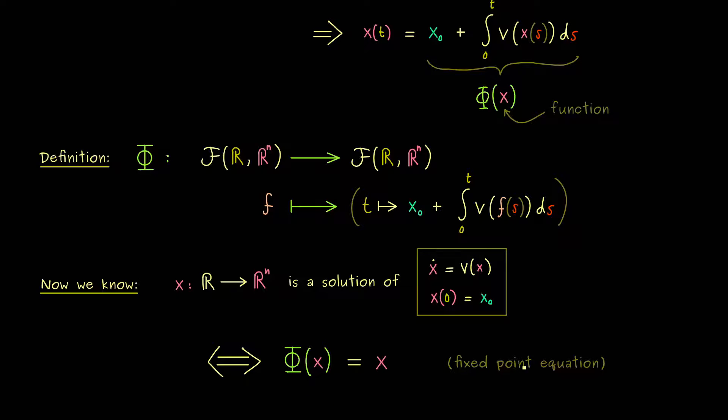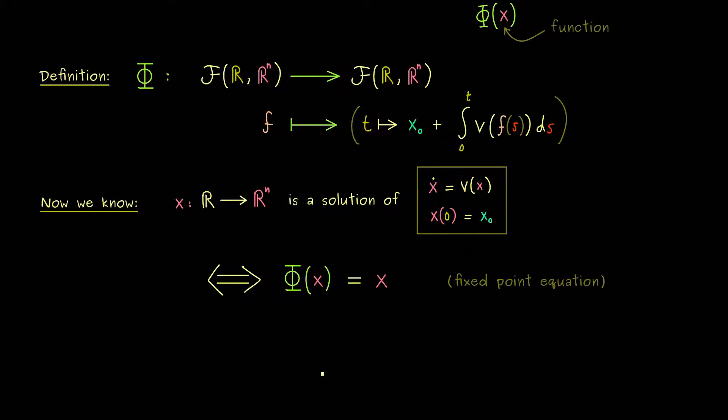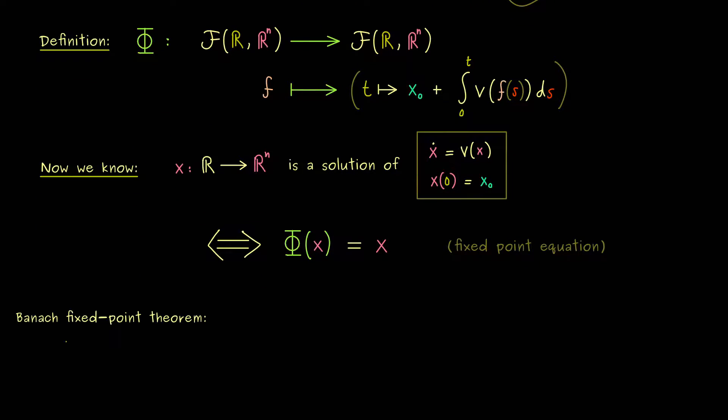This means we have translated our problem. In order to find solutions, we can just find fixed points for the function Φ. And it turns out that we can just apply very general results about fixed points. In particular, here I want to apply the so-called Banach fixed point theorem.